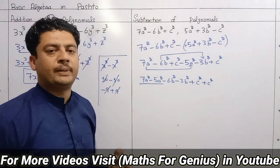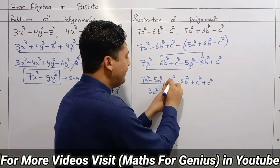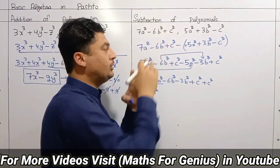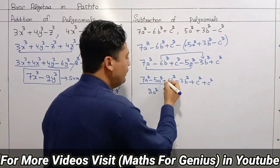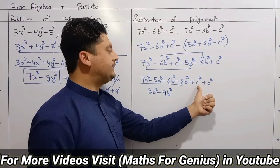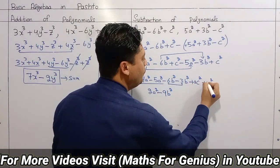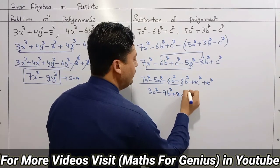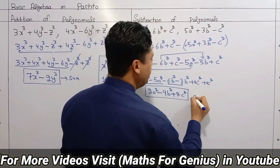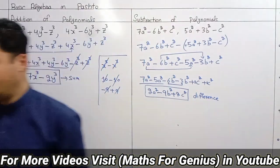7 minus 5 gives 2a². Then minus 6b² minus 3b² — adding the subtraction gives minus 9b². For c², plus c² plus c² — the coefficient is 1 plus 1, which is 2c². Now we have the answer. The subtraction result is called the difference, and addition gives the sum.